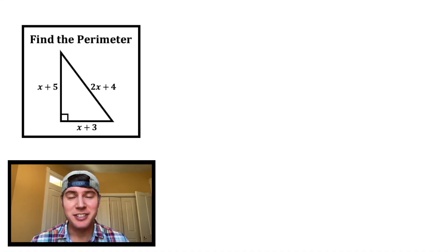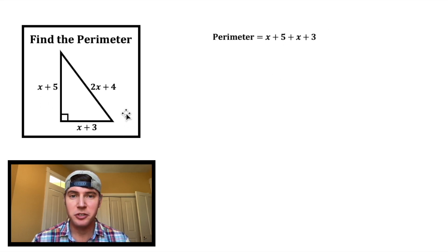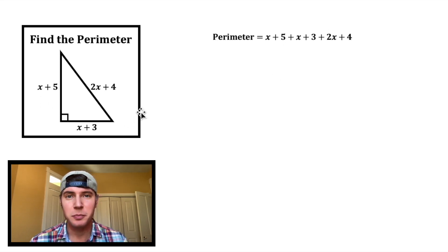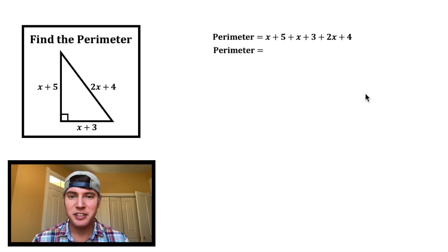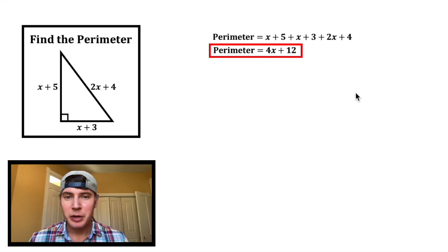I thought this looked like a fun one. It says, find the perimeter of this triangle. The first instinct is just to add up the sides. We have x plus 5, plus x plus 3, plus 2x plus 4. And then we can simplify that: x plus x plus x plus x is 4x, and 5 plus 3 plus 4 is 12. And we can put a box around that.